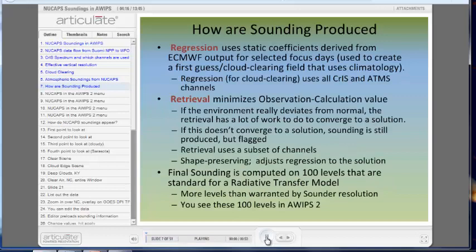A physical retrieval is used to produce the sounding, minimizing the difference between observations and calculations. If the environment really deviates from normal, the retrieval has to do a lot of work to converge to a solution. If that convergence to a solution doesn't happen, the sounding is still produced, but it's flagged.